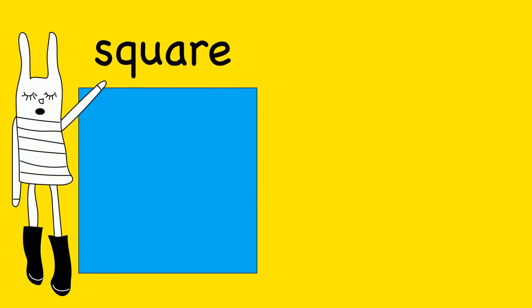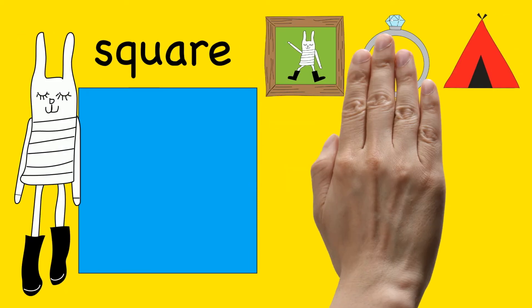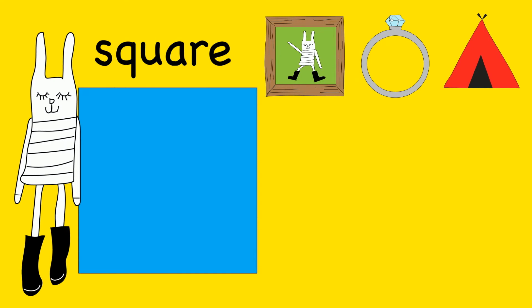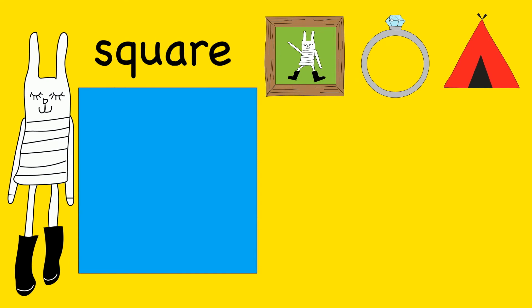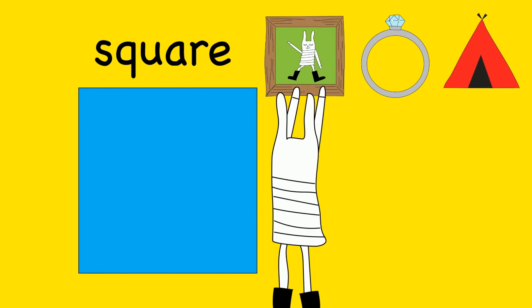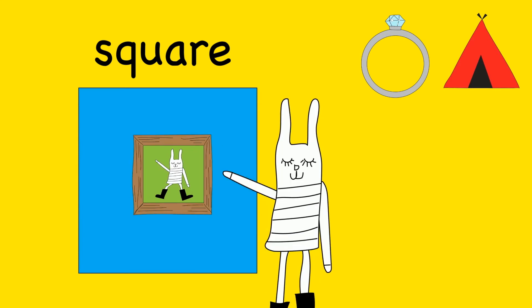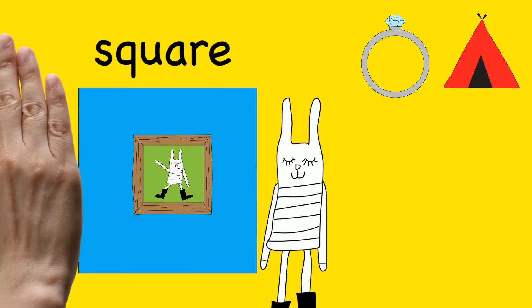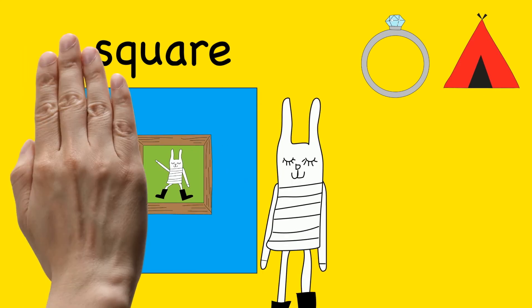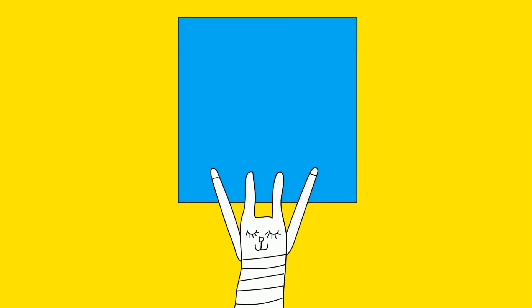I see a square. Can you show us an object that is shaped like a square? A frame is shaped like a square. Square.